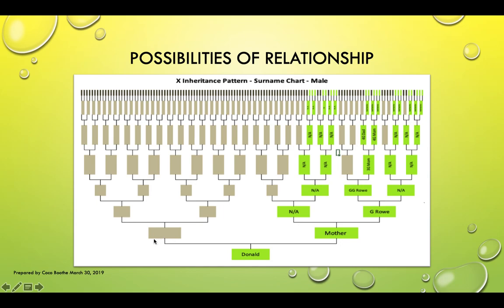To the left is where his father would be, but it's grayed out. On the right is where his mother is, shown in green. The reason the father is grayed out is because Donald did not inherit any XDNA from his father — he can only inherit it from his mother.